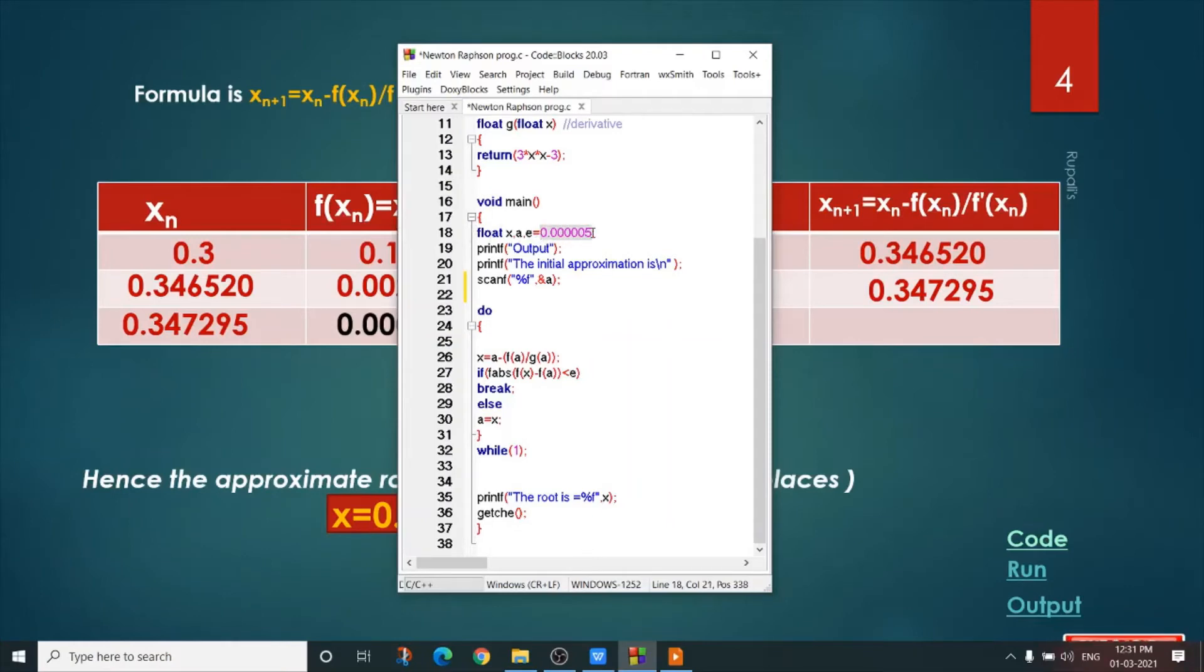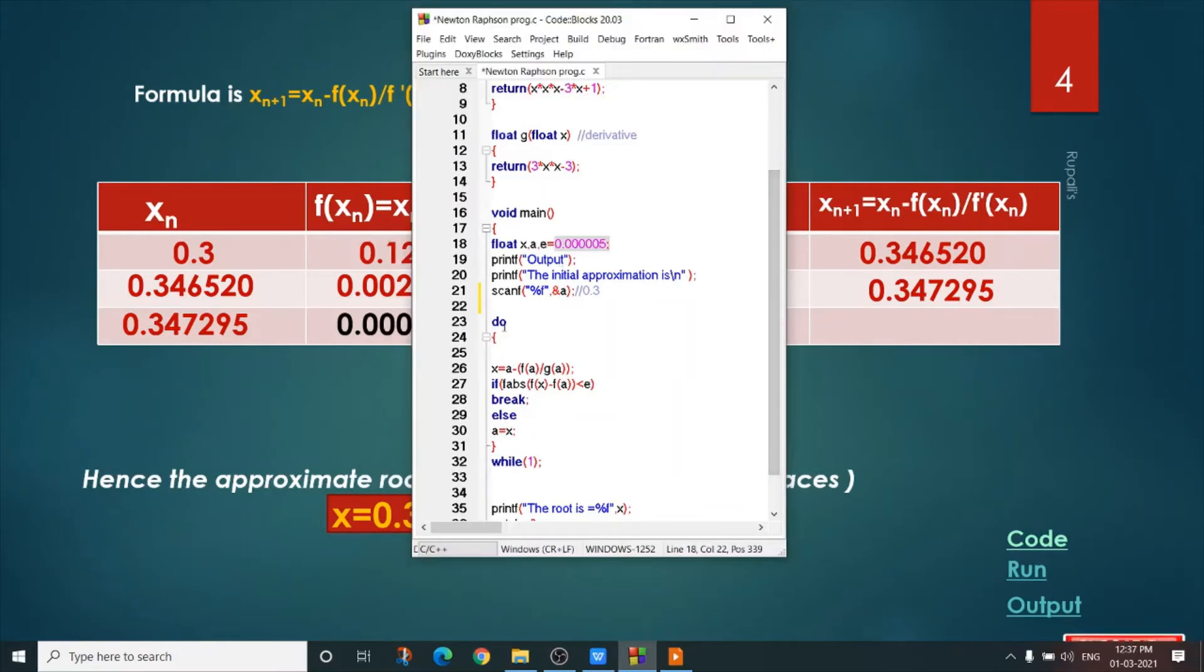I initialize it by this value and take the initial approximation. What is initial approximation? It is here 0.3. So what is the value of a? It is 0.3. Now I start one do-while loop. This is an infinite loop.